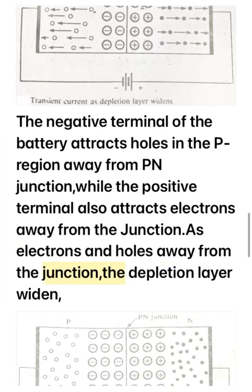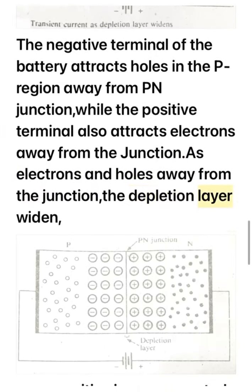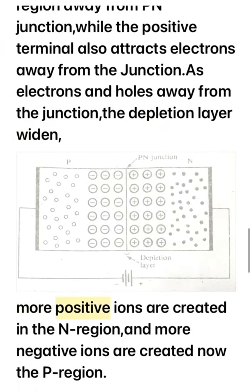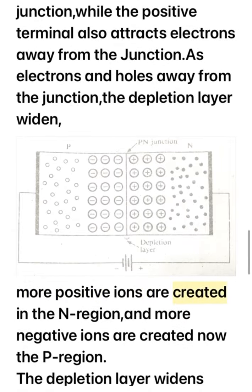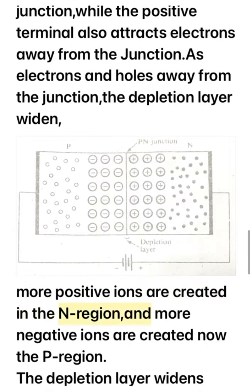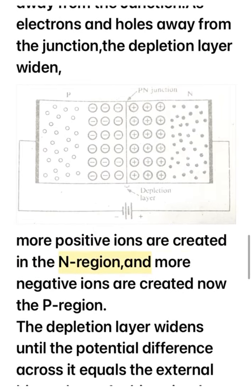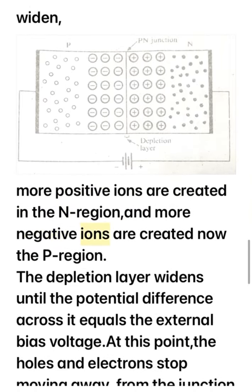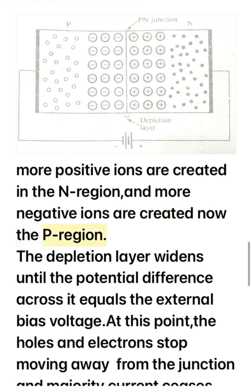As a result, the depletion layer widens. More positive ions are created in the N region and more negative ions are created in the P region. The depletion layer widens until the potential difference across it equals the external bias voltage.